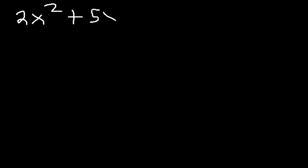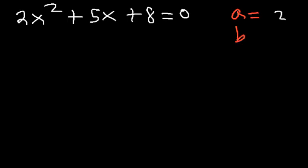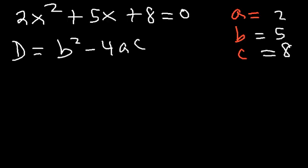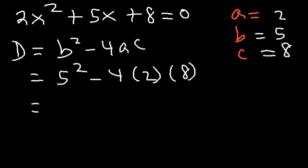Try this example: 2x squared plus 5x plus 8 equals 0. Calculate the discriminant, predict the number and type of solutions, and use the quadratic formula to confirm. Here a is 2, b is 5, and c is 8. The discriminant is b squared minus 4ac, so that's 5 squared minus 4 times 2 times 8. 5 squared is 25, and 4 times 2 times 8 is 64. 25 minus 64 is negative 39.